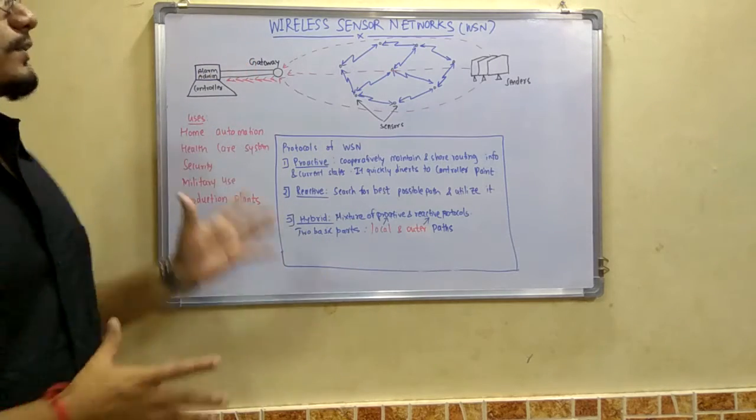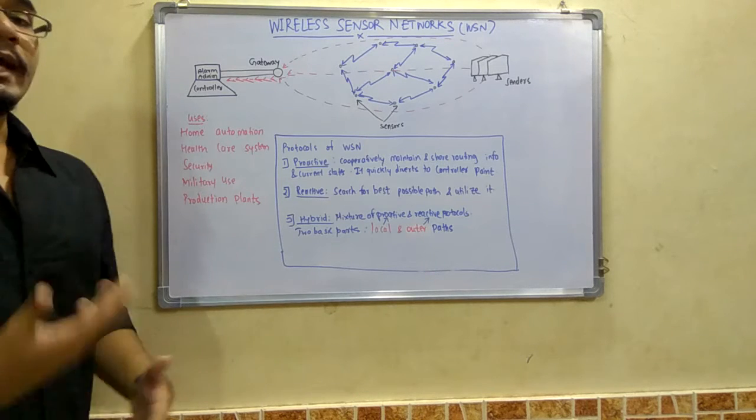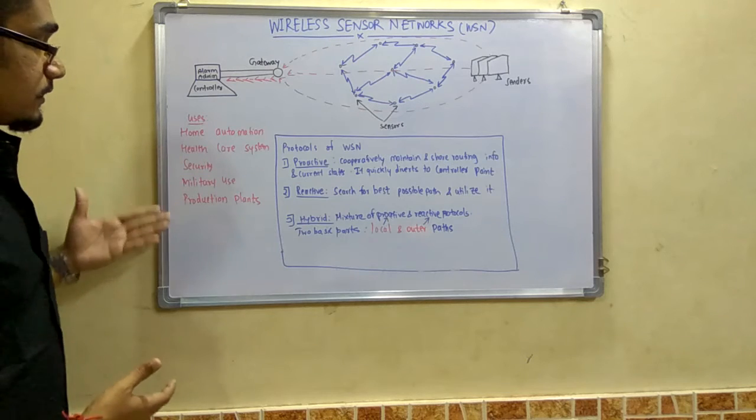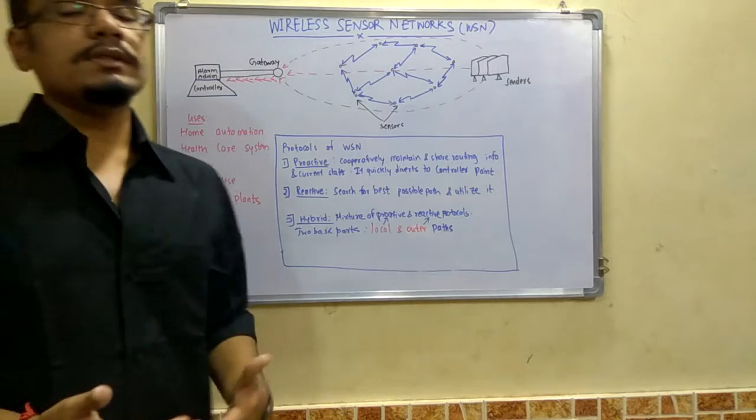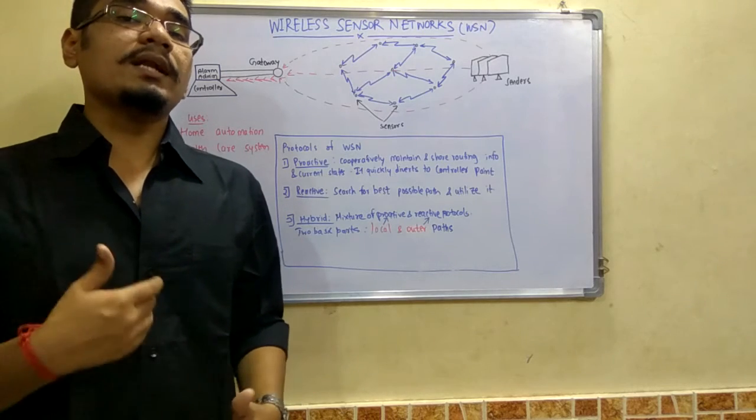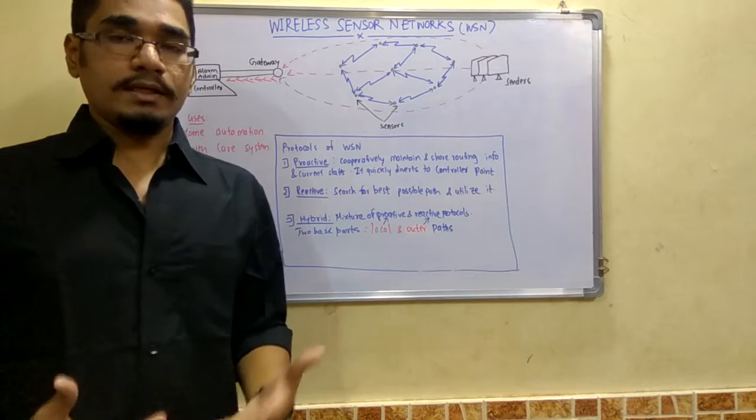This is used in home automation systems, healthcare systems, security systems, military use, as well as production plants. In these areas, WSN networks are most widely used and are more critical for any kinds of operations at any time.